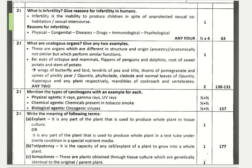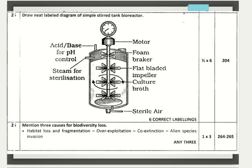Write the meaning of the following terms. Explant — any part of a plant used to produce the whole plant in tissue culture under sterile conditions in a special nutrient media. Totipotency — the capacity of any cell or explant of a plant to grow into a whole plant. Somaclones — plants obtained through tissue culture which are genetically identical to the original parent plant.